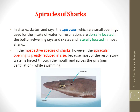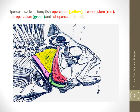The operculum series contains four bone segments known as: pre-operculum, sub-operculum, inter-operculum, and operculum. In the diagram, the operculum is shown in yellow, the pre-operculum in red, the inter-operculum in green, and the sub-operculum in pink.